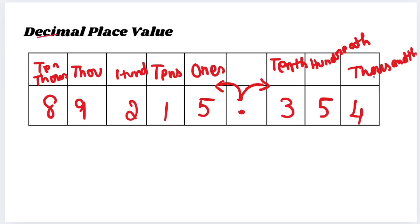The next digit will be in the thousandth place. What will be the next digit? Ten-thousandth. So towards the right: first digit is tenth, second digit is hundredth, third digit is thousandth. In every word, the last two letters will be TH — tenth, hundredth, thousandth.